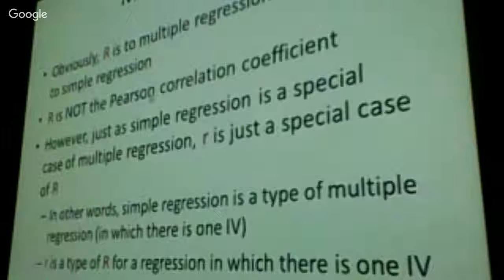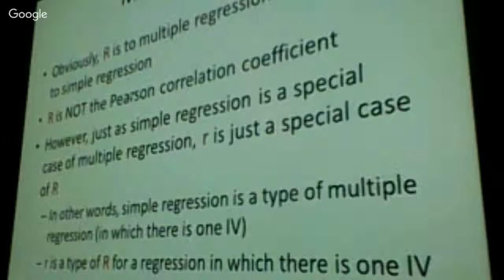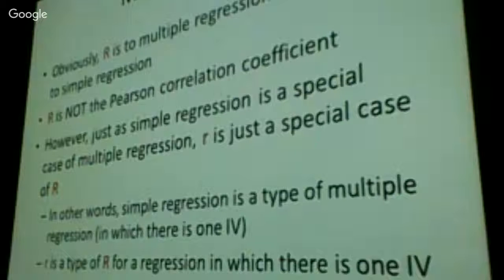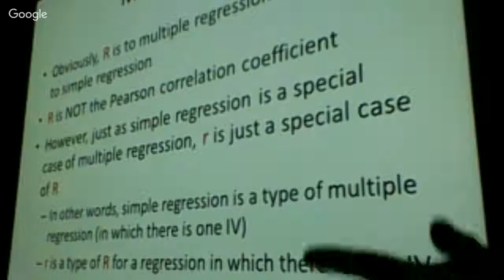So obviously, capital R is to multiple regression, but small r is to linear regression. But it is not Pearson's correlation coefficient. It's something else. So think of it this way. Just like simple regression is a special case of multiple regression, small r is a special case of big R. Big R is the real thing. Small r is a convenient special case of big R. It's like general relativity and Newtonian physics.